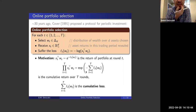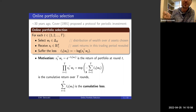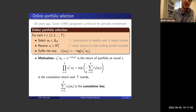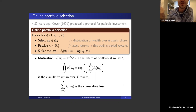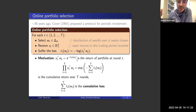Online portfolio selection — also called universal portfolios — refers to a framework introduced by Thomas Cover. Cover's contribution was also called universal portfolios because his algorithm was universal in that sense. About 30 years ago, Cover proposed the protocol for periodic investment in discrete time trading. Here's the protocol, which is what I really require you to understand.